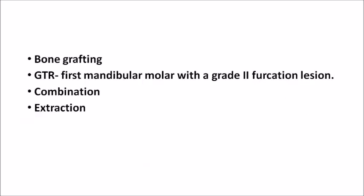We can choose to maintain, increase access, or eliminate the furcation. But if you want, you can also regenerate bone in the furcation area using bone grafting. Similarly, GTR or guided tissue regeneration can be used — the first mandibular molar with a grade 2 furcation lesion gives the best result when using GTR. Combination techniques such as bone grafting covered with a GTR membrane also help in regeneration. If nothing works out, finally you will have to do extraction of the involved tooth.